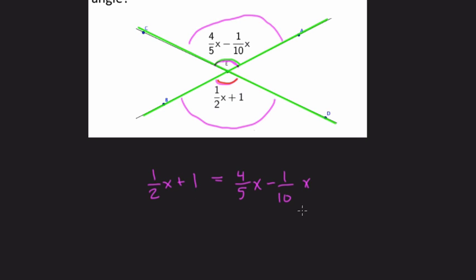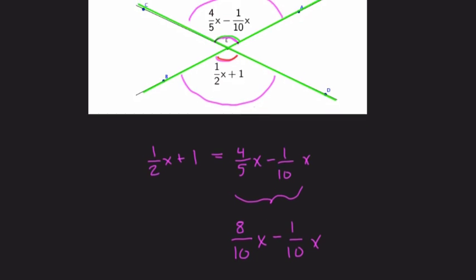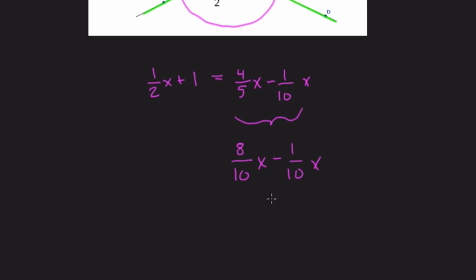Here what I would do is start by combining like terms. I'd take 4/5 and convert it to 8/10, because that's an equivalent fraction. Now I can quickly subtract: 8/10 minus 1/10, that's 7/10. So we have 7/10x equals 1/2x + 1.